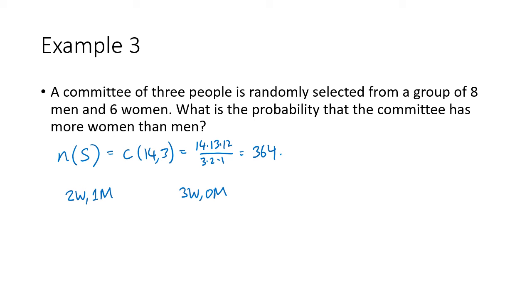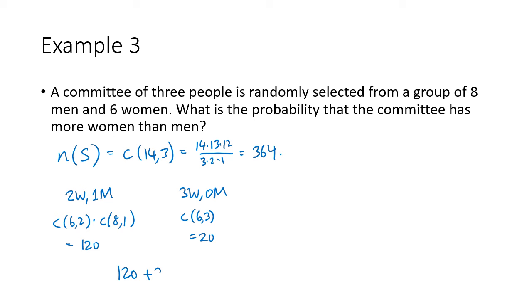For two women and one man, we count the ways to choose two of our six women times the ways to choose one of our eight men: 6 choose 2 × 8 choose 1 = 120. For three women and no men, that's 6 choose 3 = 20. Adding these: 120 + 20 = 140. So our probability is 140 divided by 364.